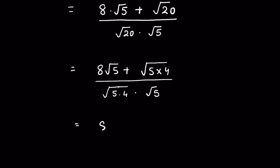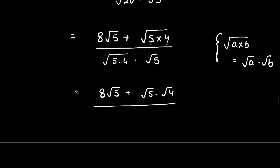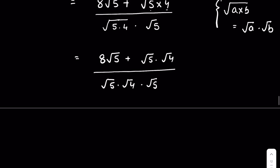So we get 8 times square root of 5 plus square root of 4 times square root of 5. We know that square root of a times b can be written as square root of a times square root of b. So square root of 20 becomes square root of 5 times square root of 4, and the denominator is square root of 5 times square root of 4 times square root of 5.